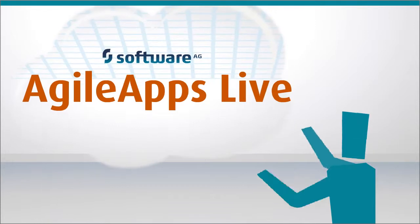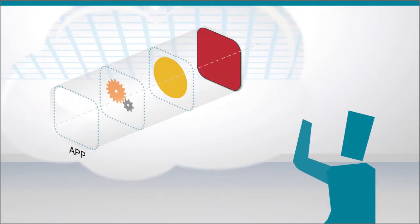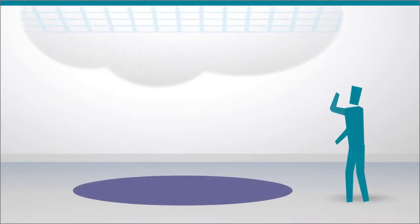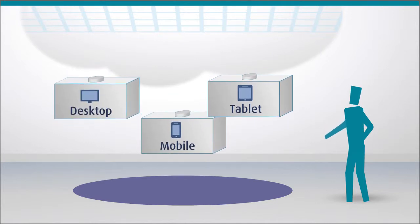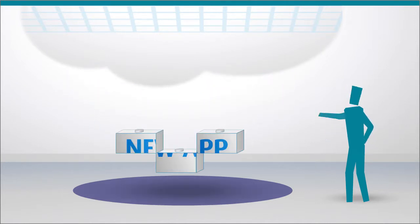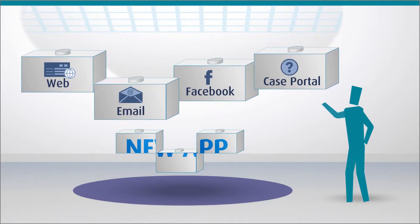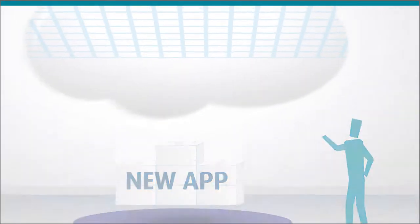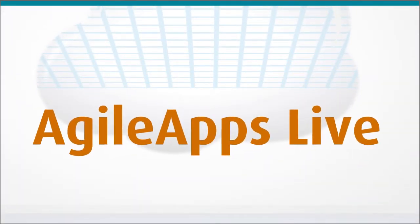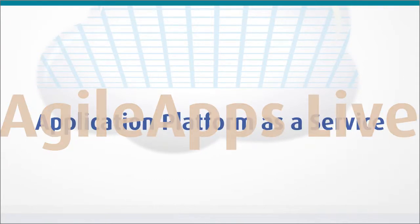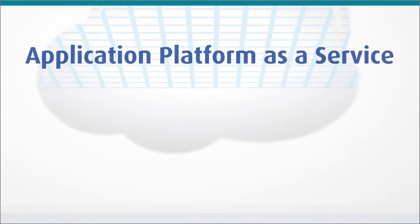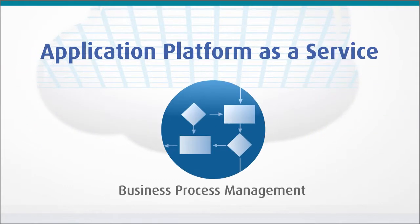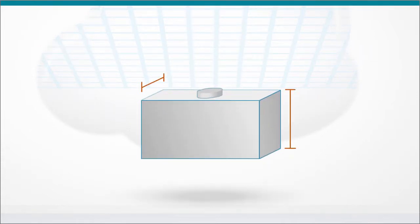With Agile Apps Live from Software AG, assembling your new application is a snap. You could start with the devices users will use to access the application, then snap in the places where they'll engage. Agile Apps Live is something altogether new in cloud land — it's application platform as a service with business process management at its core.